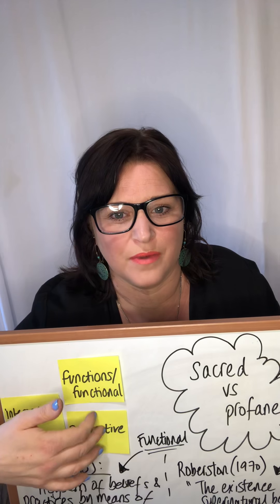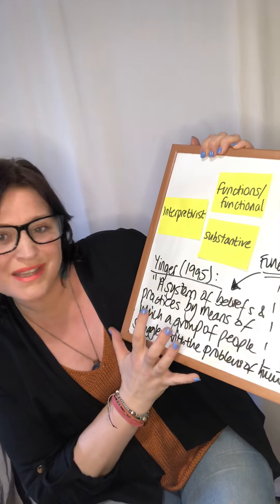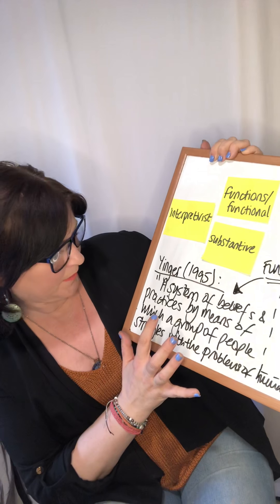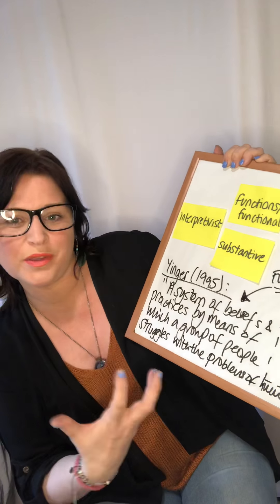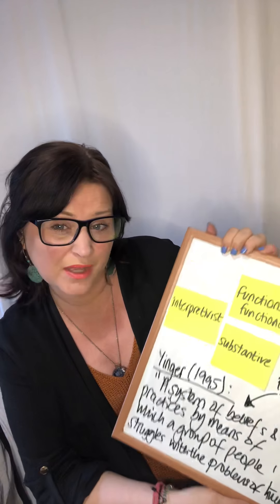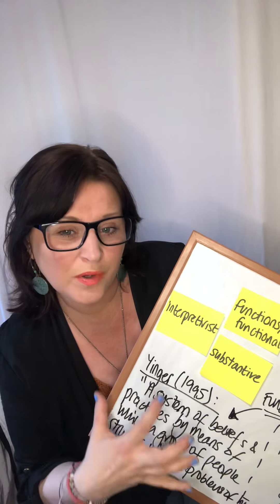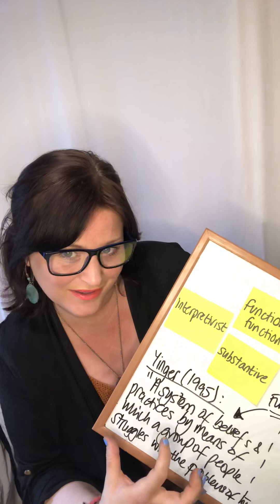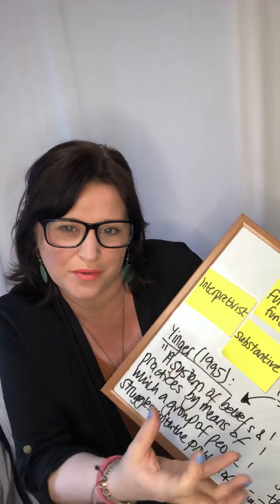We're just going to focus on functional and substantive for a moment. If we look at what Milton Yinger said, this is a very functional definition of religion. Yinger said that religion is a system of beliefs or practices by means of which a group of people struggle with the problems of humanity. So Yinger was basically saying that religion provides us with the function of helping us struggle through the inevitable problems of human life.